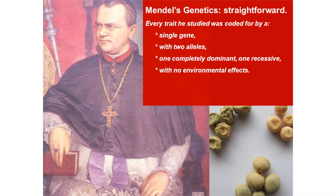What we're going to do is consider the fact that Mendel's genetics — the version he talked about, the version he discovered — was fairly straightforward and relatively simplistic. He looked at seven different traits, but all the traits he looked at, whether it was wrinkled versus round, green versus yellow, and so on, they were all coded for by a single gene that had two alleles: one completely dominant, one completely recessive allele, and there were no environmental effects on the ultimate expression in the phenotype.